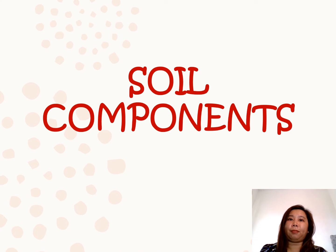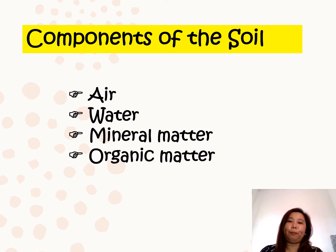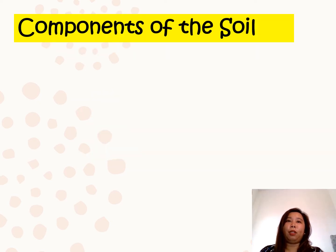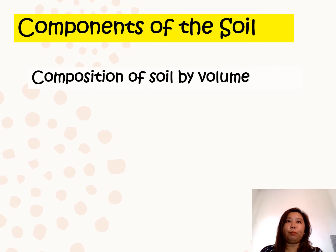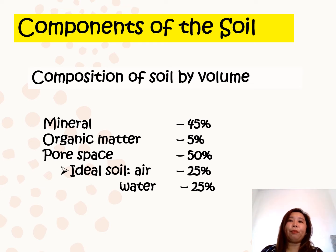Moving further, let us now look at the different soil components. There are four soil components: air, water, mineral matter, and organic matter. In terms of composition by volume, mineral matter comprises 45%, organic matter is 5%, and the remaining 50% is pore space, wherein 25% is air and 25% is water.